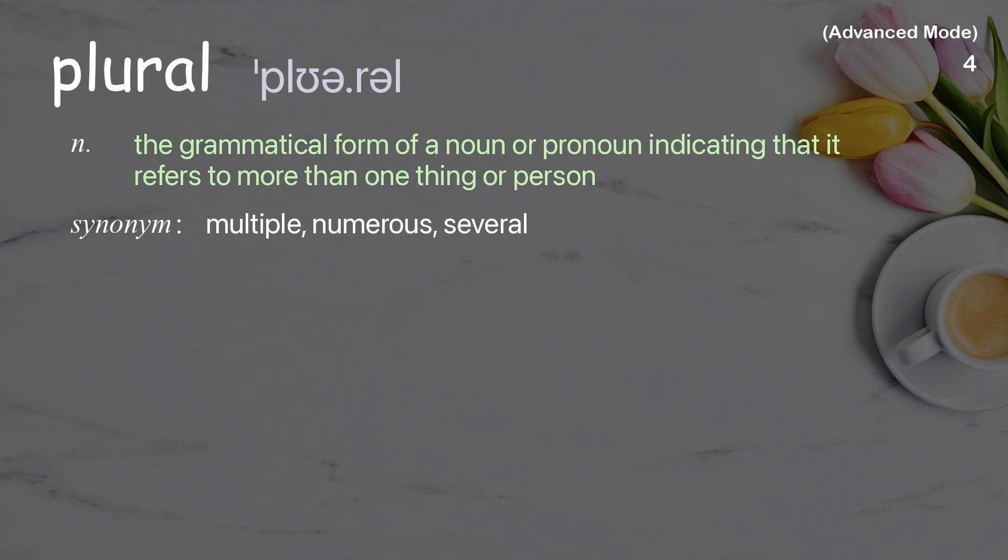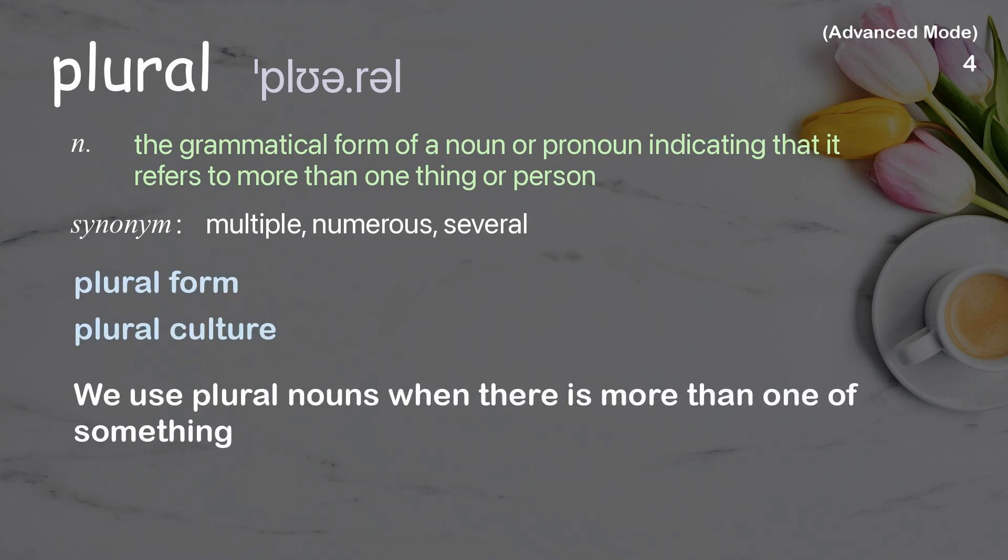Plural: the grammatical form of a noun or pronoun indicating that it refers to more than one thing or person. Examples: plural form; plural culture. We use plural nouns when there is more than one of something.